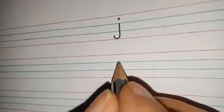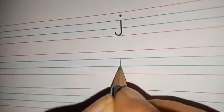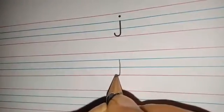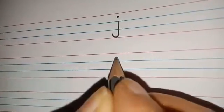Now j, how do we make it? Start from the top blue line, touch the bottom pink. Then we will make a hook. Make a dot. J for jump.